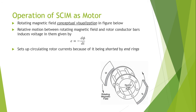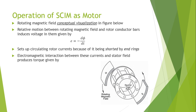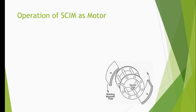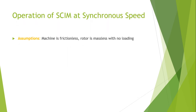This sets up circulating rotor currents because the bars are shorted by the end rings. The electromagnetic interaction between these currents and the stator fields produces a torque given by the formula: T = k · Φ · I₂ · cos(φ₂), where k is a proportionality constant depending on construction parameters and materials, Φ is the stator flux magnitude, I₂ is the rotor current magnitude, and φ₂ is the angle between the rotor currents and the rotor voltages.